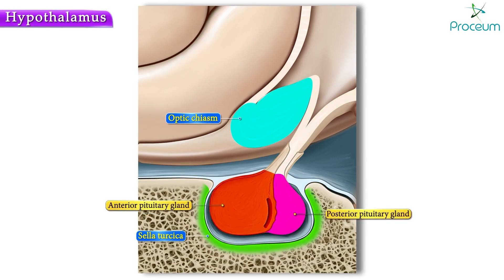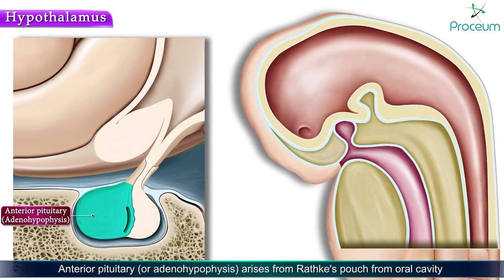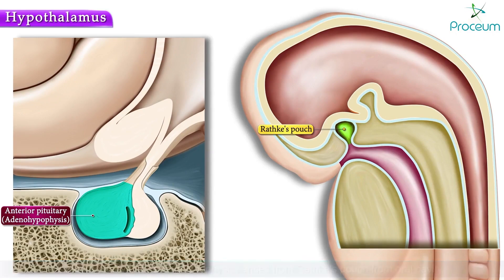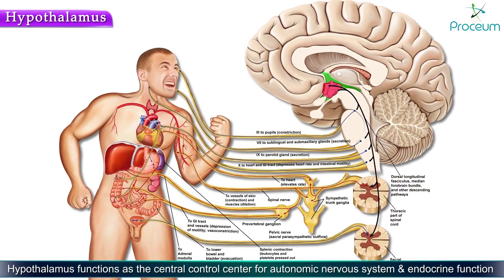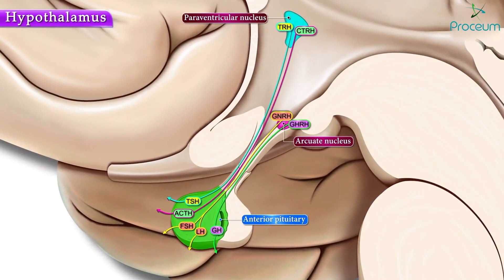The anterior pituitary, or adenohypophysis, arises from Rathke's pouch from the oral cavity, and the posterior pituitary, or neurohypophysis, arises from neural ectoderm at the floor of the forebrain. The hypothalamus functions as the central control center for the autonomic nervous system and endocrine function.